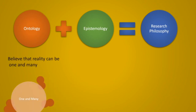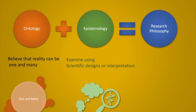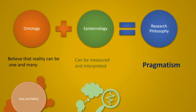The third belief is that reality can be one or many, and epistemologically it can be measured or interpreted — both options are available. We use whatever tool best fits the situation. In this case we are using a pragmatism approach. Pragmatism deals with situations where reality can be singular or multiple, and knowledge can be measured or interpreted.